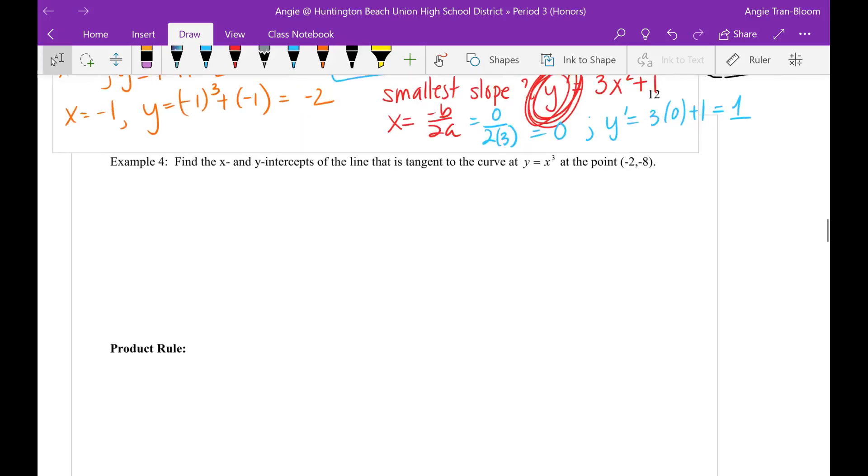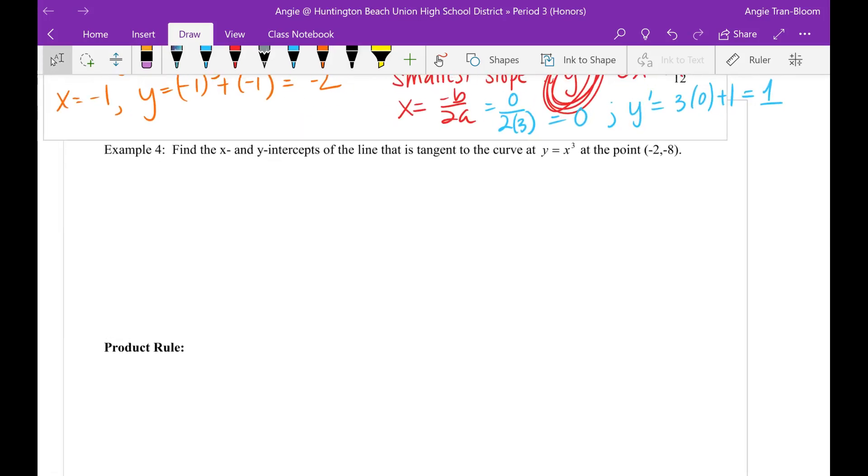Hey guys, here is example 4. Find the x and y intercepts of the line that is tangent to the curve y equals x to the third at the point negative 2 comma 8.